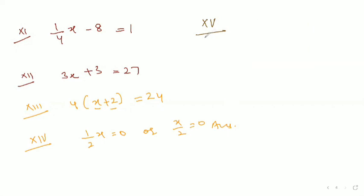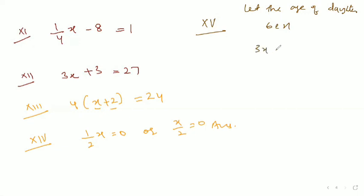Now the fifteenth part: the age of Mr. Roy is 10 more than 3 times his daughter's age, and he is 40 years old. Let the age of the daughter be x. So 3 times the daughter's age plus 10 equals 40. Our equation is 3x + 10 = 40. That was all about question number 2, exercise 7.1, chapter linear equations of class 7.